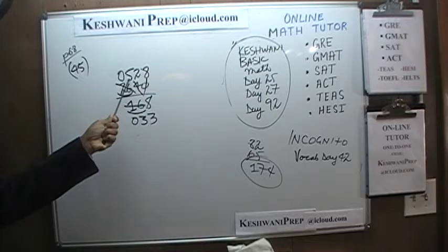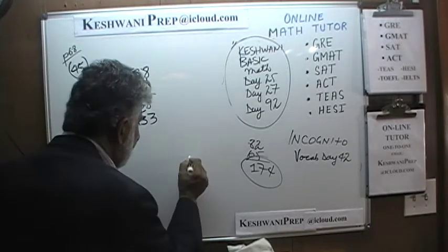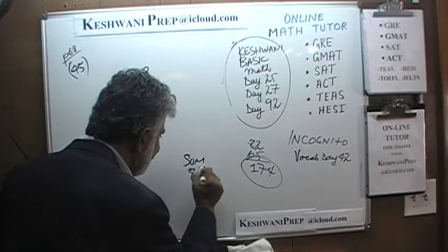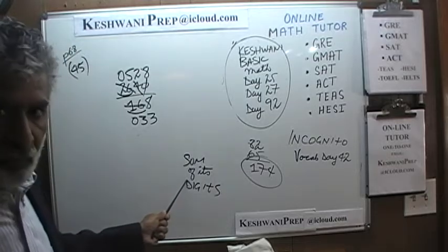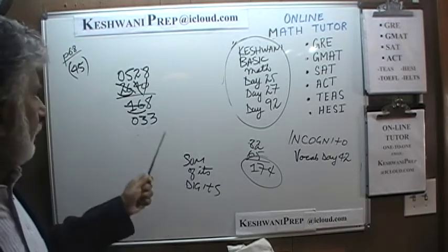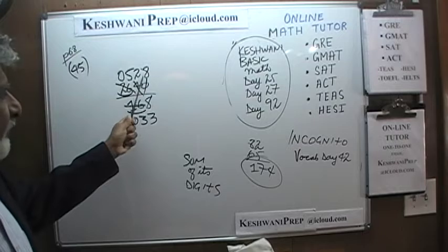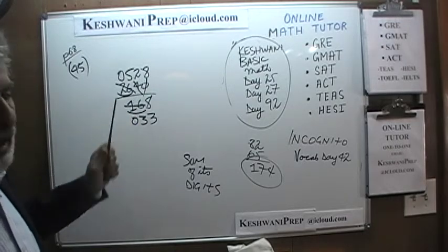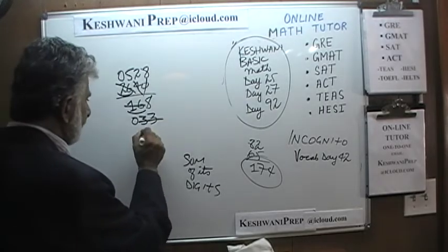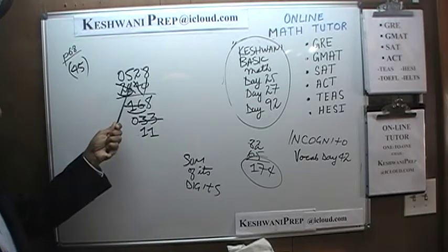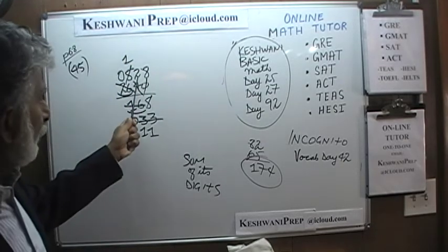A number is divisible by 3 if the sum of its digits is divisible by 3. For 528: 2+5+8 = 15, which is divisible by 3, confirming 528 is divisible by 3. Dividing 528 by 3 gives 176, and dividing 33 by 3 gives 11.